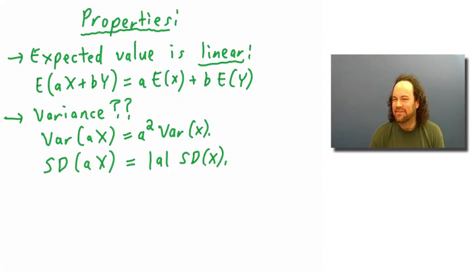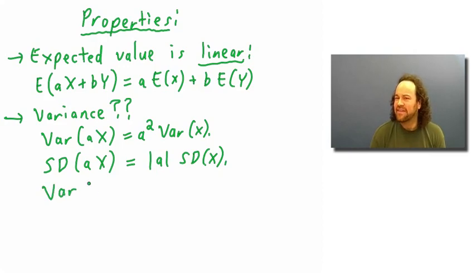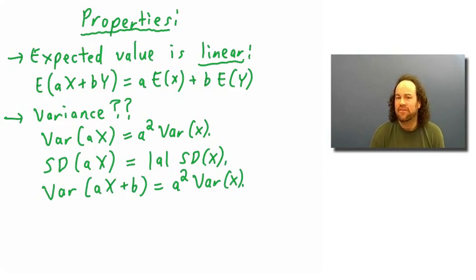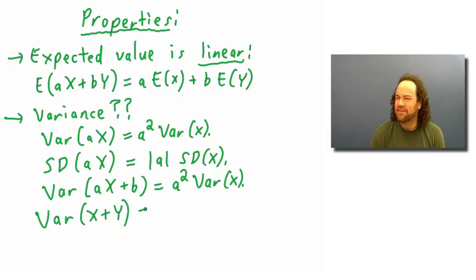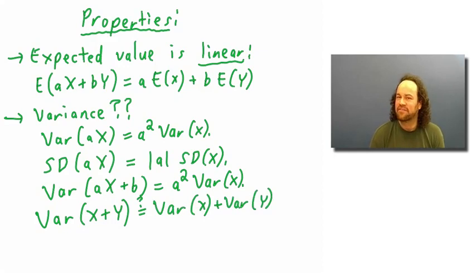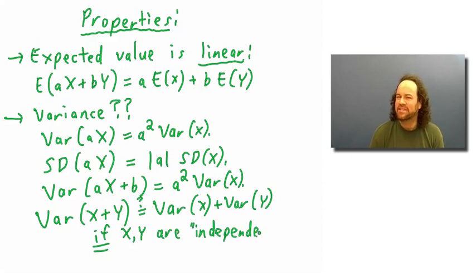If a is positive, the standard deviation multiplies by a; if a is negative, it multiplies by the absolute value of a. Adding a constant doesn't affect the variance, so the variance of ax + b is just a² times the variance of x, with no mention of b. The variance of a sum x + y equals the sum of the variances only if x and y are independent — meaning they don't have any special influence over each other.